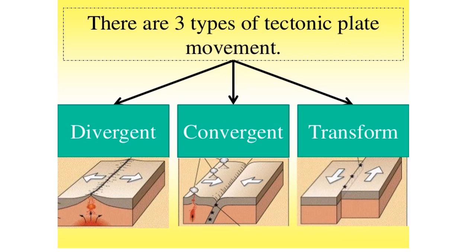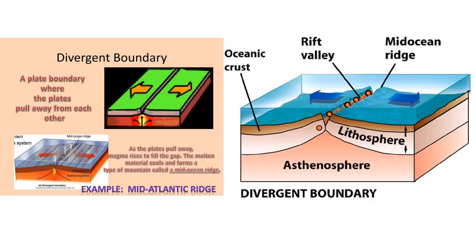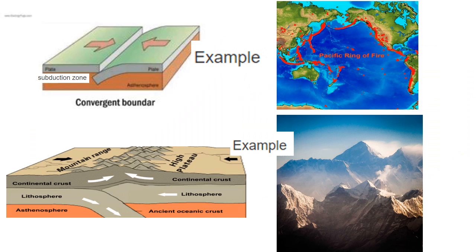In divergent boundaries, plates move away from one another. In convergent boundaries, plates move towards one another. In transform boundaries, plates slide past one another. Divergent boundaries occur when two plates move away from each other — the space between these plates widens and forms a great crack. Under the ocean, this space is covered by magma — seafloor spreading. The Mid-Atlantic Ridge is an example of seafloor spreading.